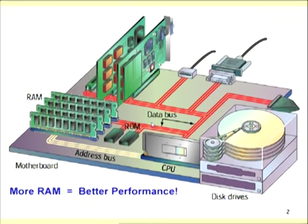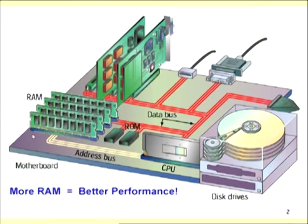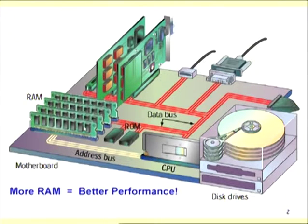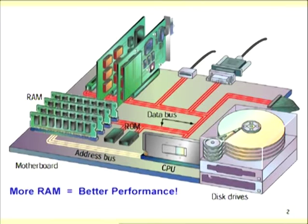Inside a computer you may have seen this arrangement during maintenance — this is the motherboard of a PC. The vertical blocks visible here are the memory modules inside a PC. Four different memory modules are visible, and this is the CPU. This is the primary memory.